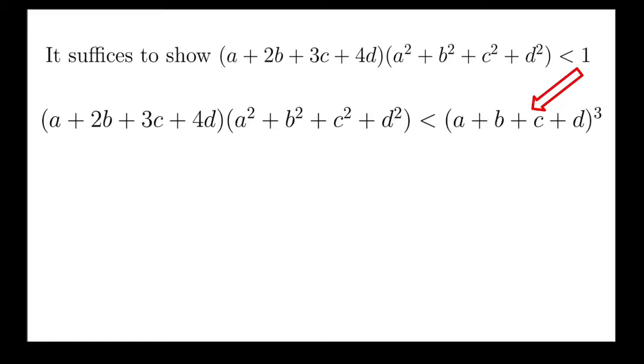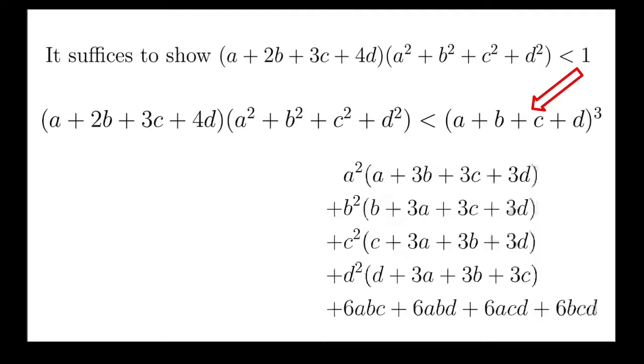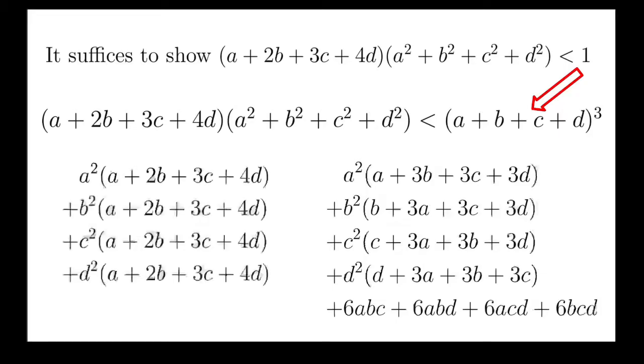Notice that the right-hand side power would equal to this bunch of terms. The sum of the cubes, and you have 12 terms of the form A square B, which all have coefficients 3, and 4 terms of the form A, B, C, which have coefficients 6. And by regrouping, taking common factors of A square, B square, C square, D square, and at the same time, you can split left-hand side and rewrite that as this sum. Again, taking common factors A square, B square, C square, D square.